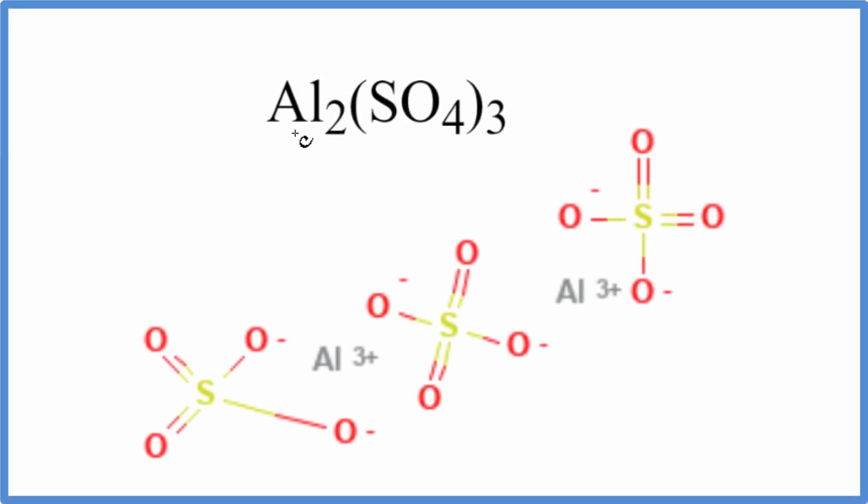In this video, we'll write the Lewis structure for Al2(SO4)3. This is aluminum and this is the sulfate ion.